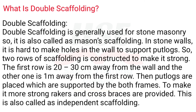What is double scaffolding? Double scaffolding is generally used for stone masonry, so it is also called mason's scaffolding. In stone walls, it is hard to make holes to support putlogs, so two rows of scaffolding are constructed. The first row is 20 to 30 centimeters away from the wall and the other is 1 meter away from the first row. Putlogs are placed supported by both frames. To make it stronger, rakers and cross braces are provided. This is also called independent scaffolding.